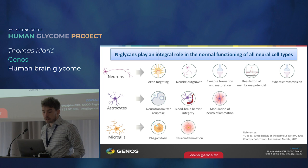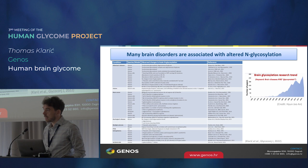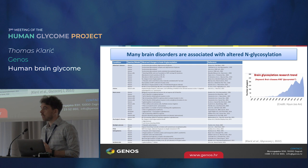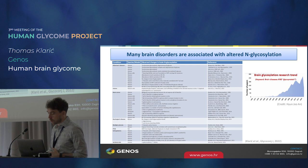N-glycans are critical in the normal functioning of all neural cell types. Here are just some of the critical processes they are involved in. It should not come as a surprise then that altered N-glycosylation is also associated with numerous brain disorders, some of which are listed here. But this list is growing all the time as people become more interested in understanding N-glycans in brain physiology and disease — it's a rapidly growing field.